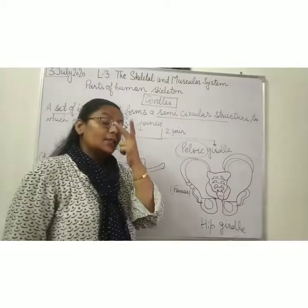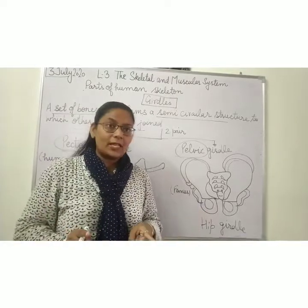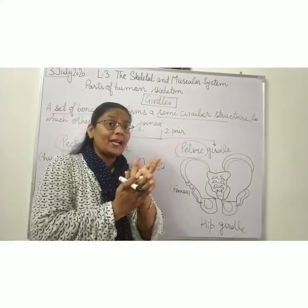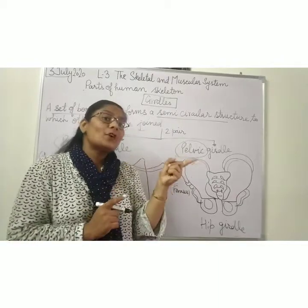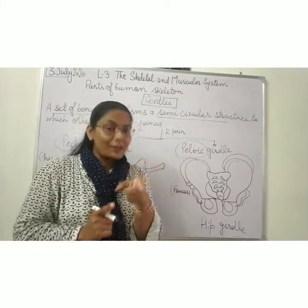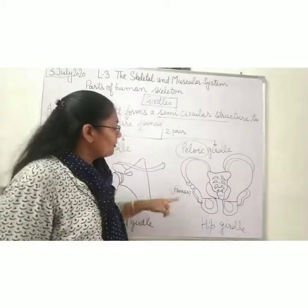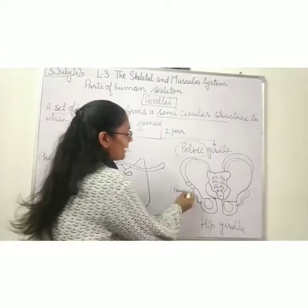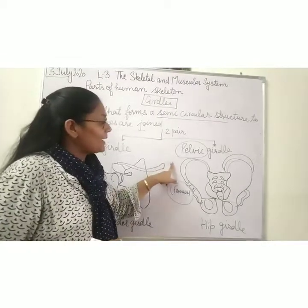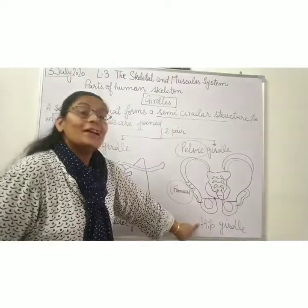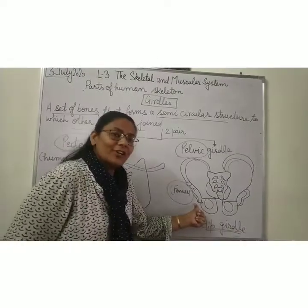Now we come to the pelvic girdle, which is present in the hip region and forms the hip. The upper region of our hind limb — where we saw the femur — is attached to the pelvic girdle. So the femur, which is the longest bone, is attached to the pelvic girdle, forming our hip girdle.